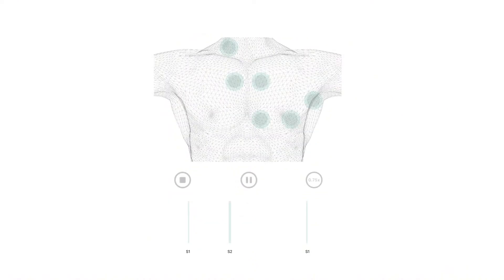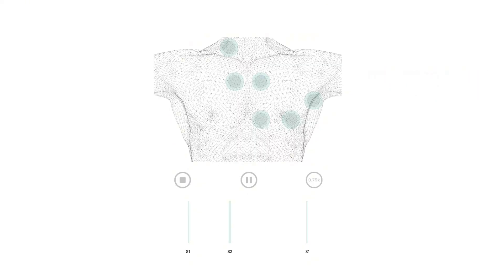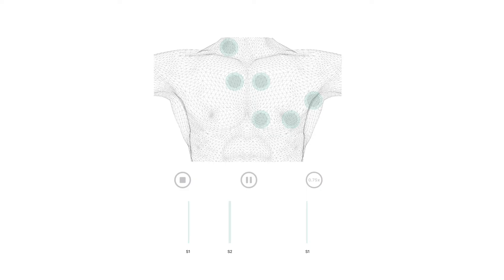Because mitral regurgitation produces a volume overloaded left ventricle, a third heart sound can often be heard as a low frequency vibration in early diastole, after the second heart sound, as in this patient. It is thought to be caused by the rapid filling of a highly compliant left ventricle.